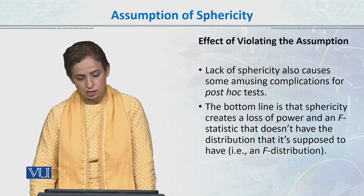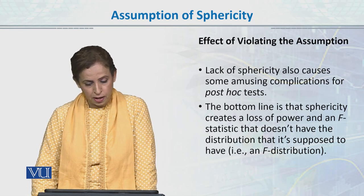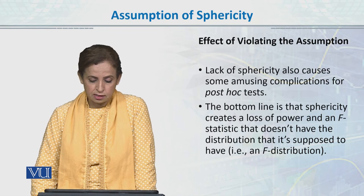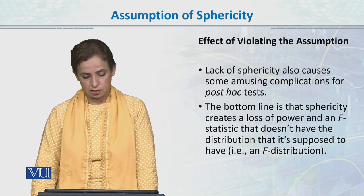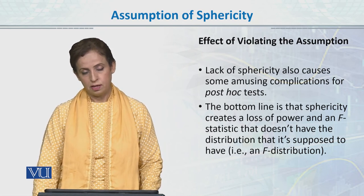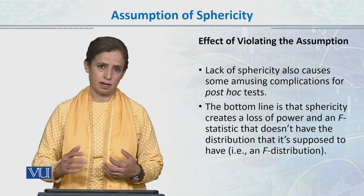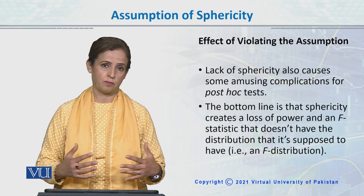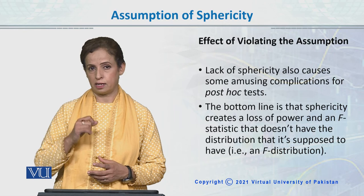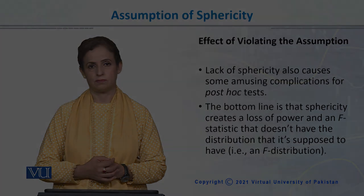A lack of sphericity also causes some complications from post hoc tests. The bottom line is that sphericity creates a loss of power and an F statistic that doesn't have the distribution it is supposed to have. इसको हम practically देखते हैं by running repeated measures ANOVA and interpreting the values in the next module.